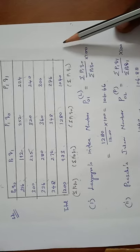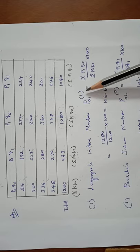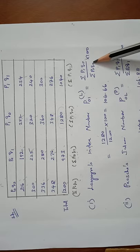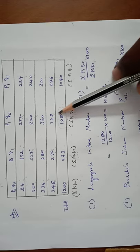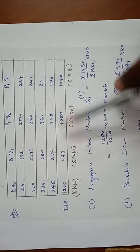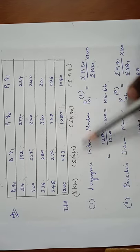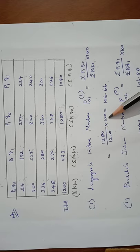First formula: Laspeyres index number formula. P01 Laspeyres equals sigma P1Q0 by sigma P0Q0 into 100. Sigma P1Q0 is 1280, sigma P0Q0 is 1200. So 1280 by 1200 into 100 equals 106.66. This is the result of Laspeyres index number.